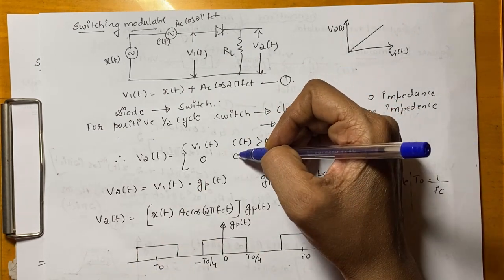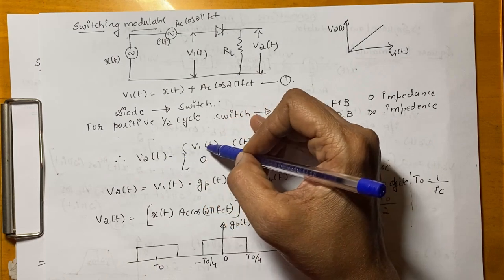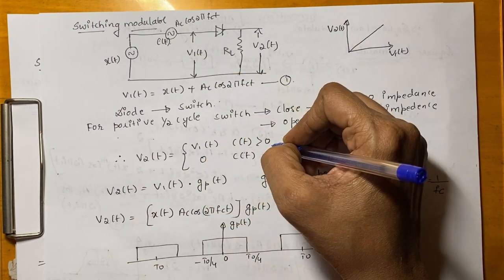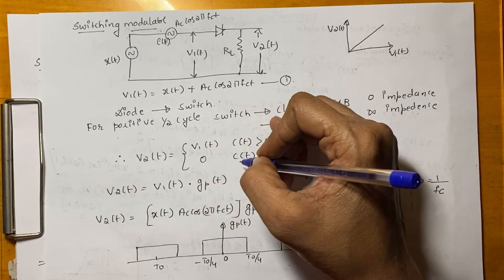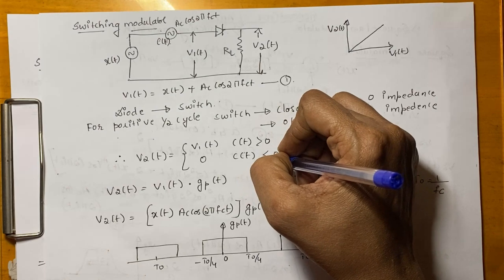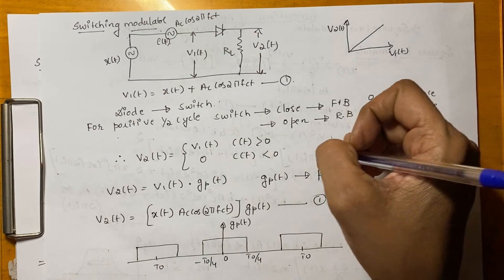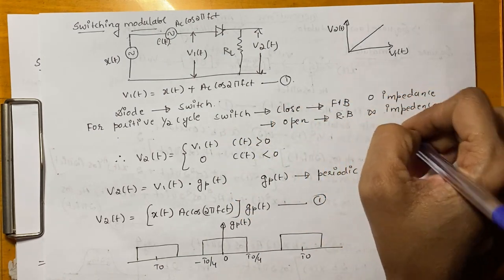Mathematically we can represent V2(t) as V2(t) = V1(t) for C(t) > 0 and V2(t) = 0 for C(t) < 0. That is, V2(t) is nothing but V1(t) multiplied by a train of pulses.